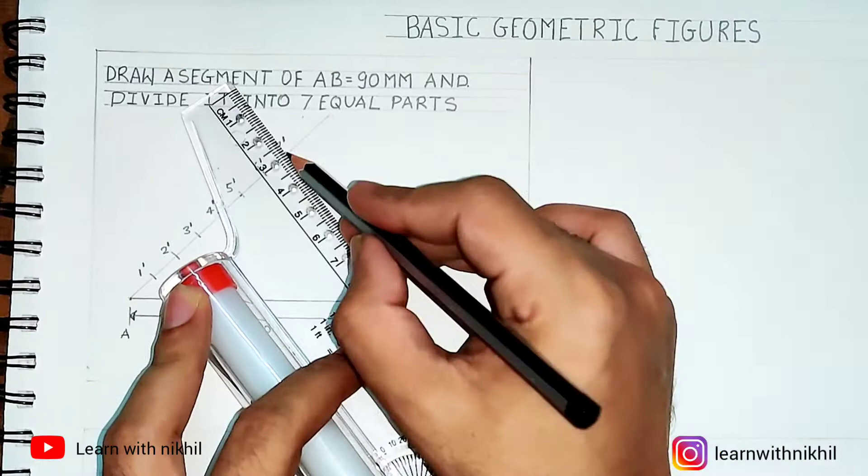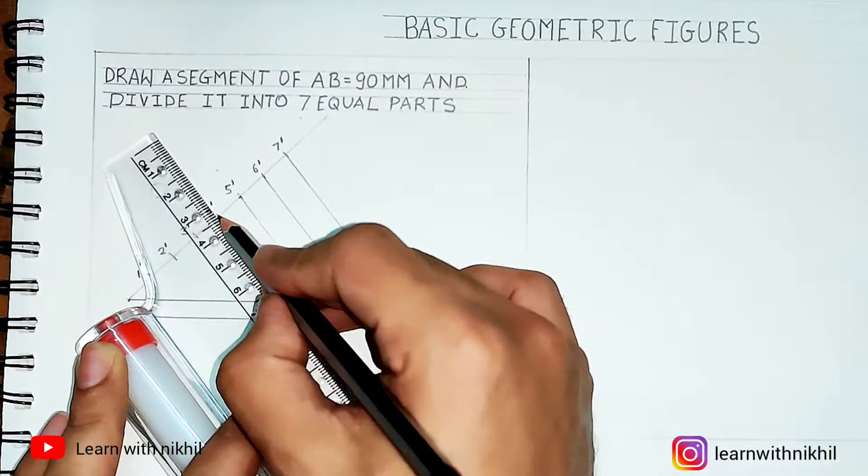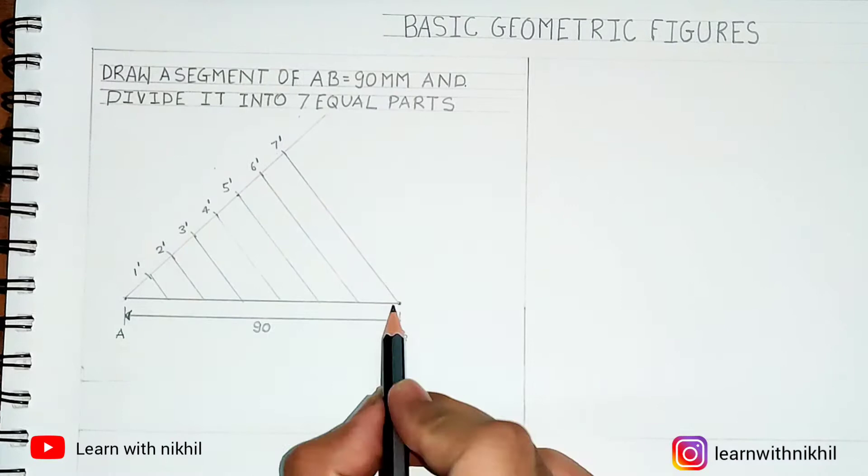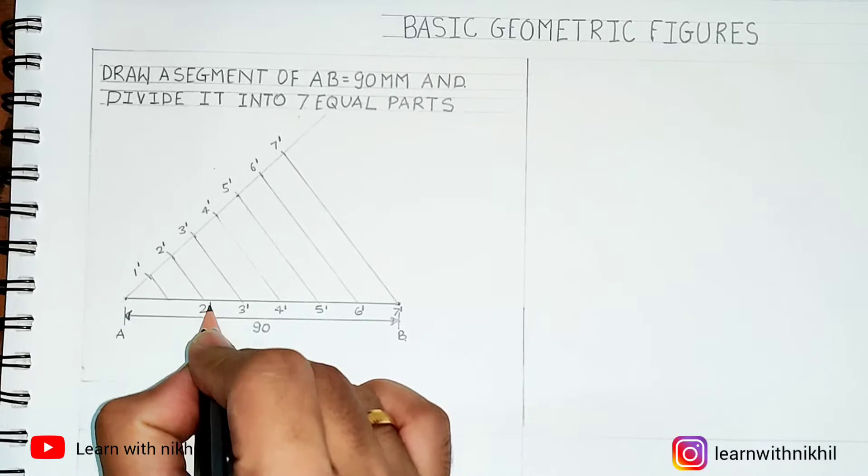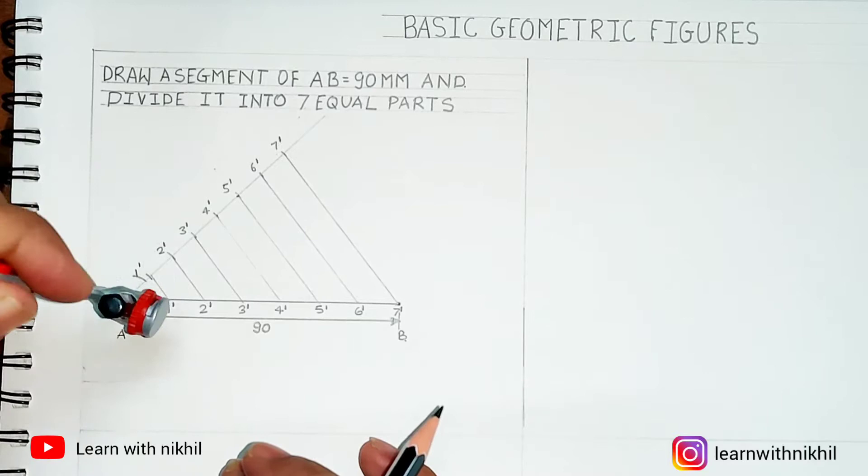Then we will join through a roller scale. We will join the last two points - seven dash to B1 - and we will draw parallel lines to it. As you can see, the line AB has been divided into seven equal parts through the reference of this 45 degree line.